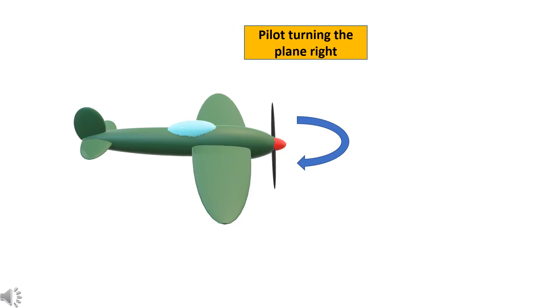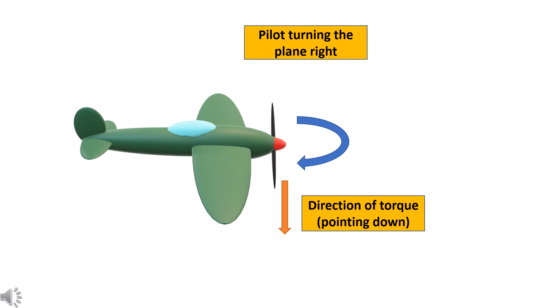When the pilot tries to turn the plane right, the pilot applies a torque turning the plane right. This torque direction is also given by the right-hand thumb rule. Now, what will happen during this turning? The angular momentum vector always tries to chase and align with the applied torque vector.